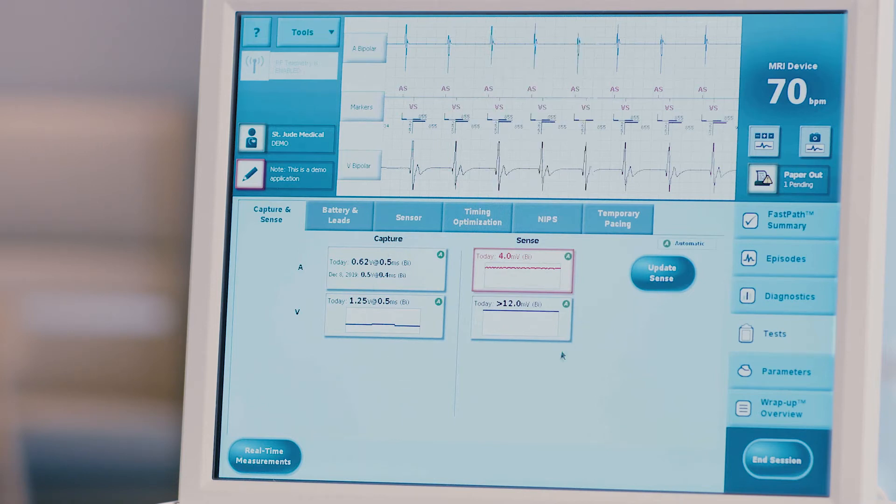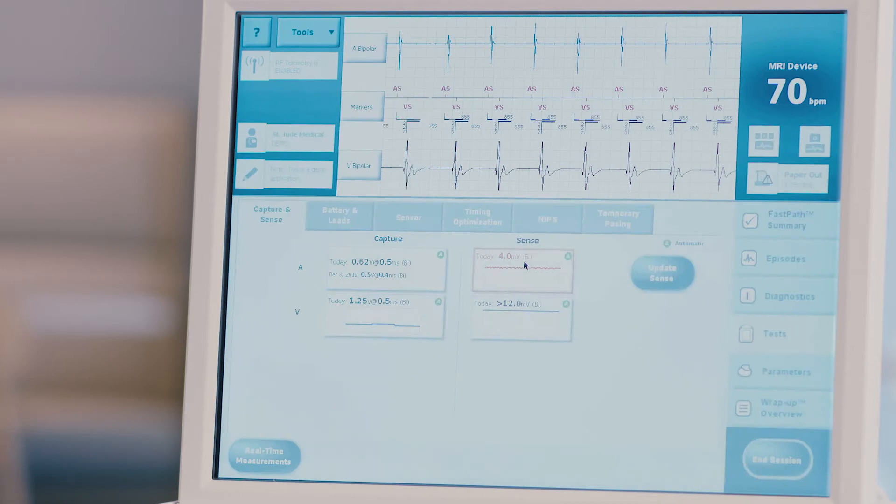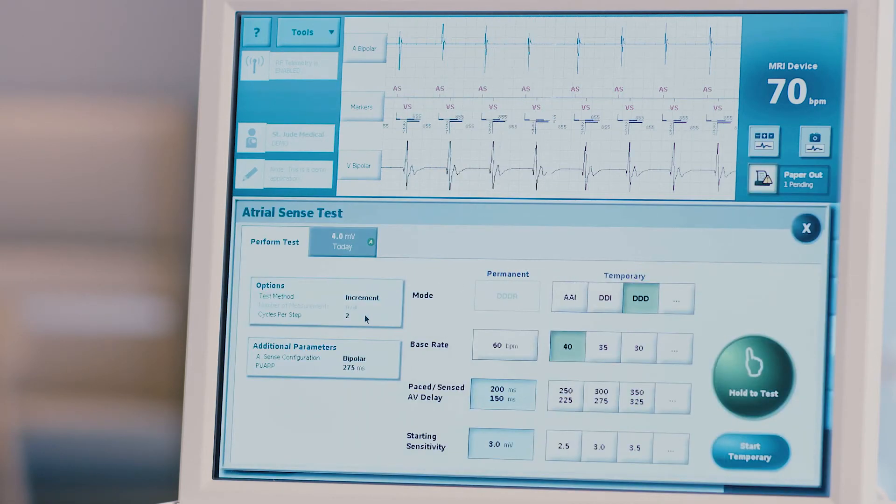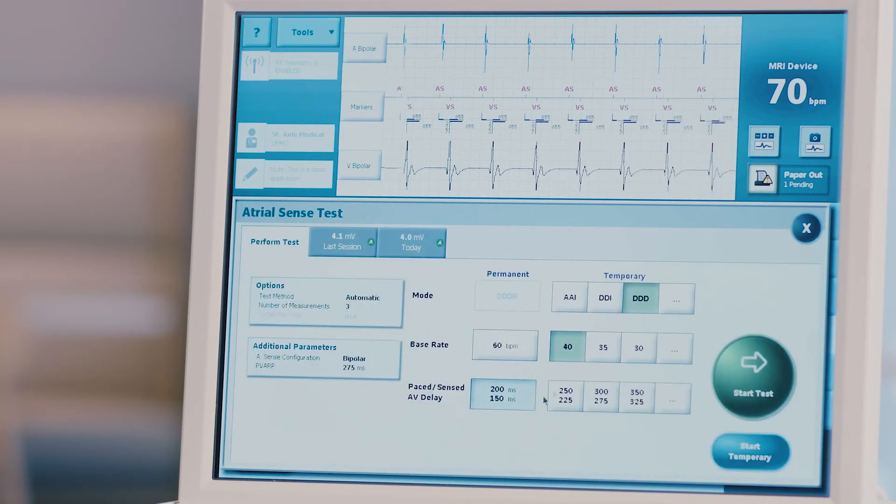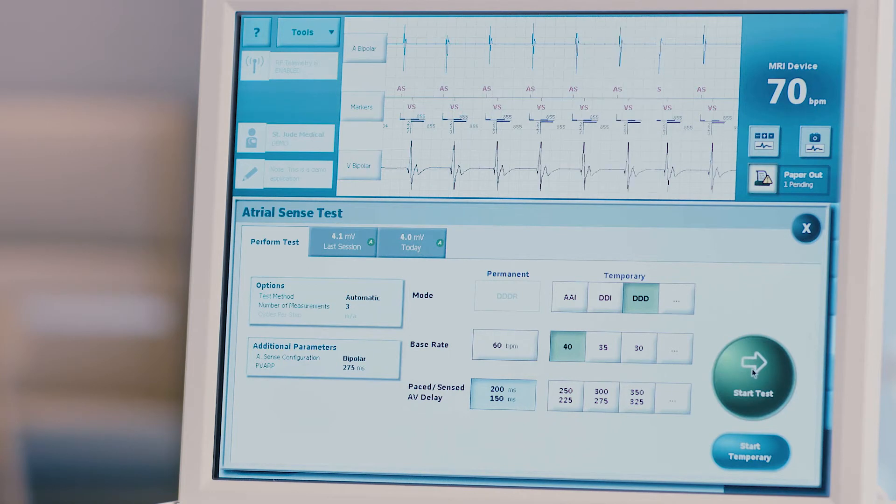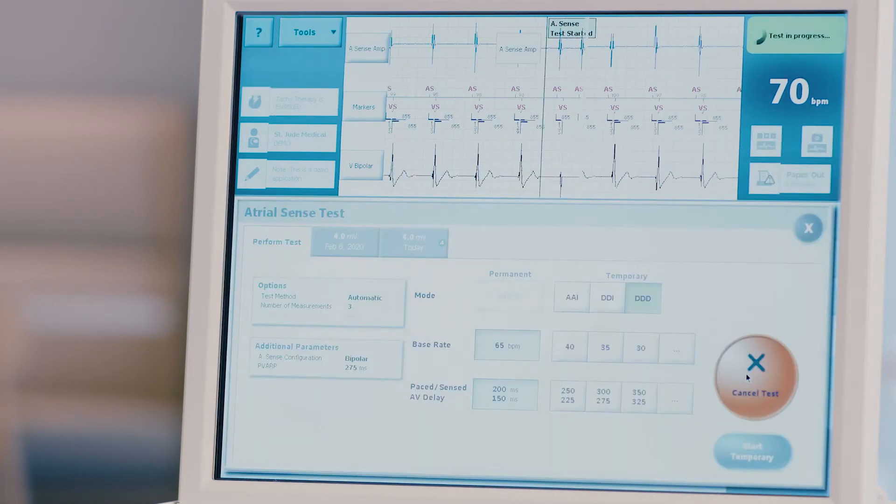Complete any necessary tests that have not been automatically performed. Press any box that is noted not performed to open the manual testing screen. Make the appropriate settings adjustments per the recommendation of the healthcare provider or certified Abbott employee. Press the start test button or hold the button as directed for manual threshold testing.